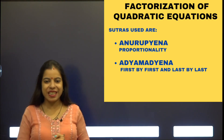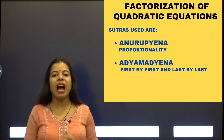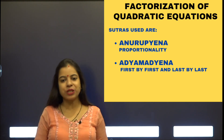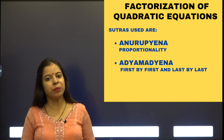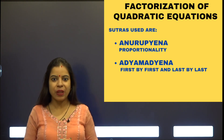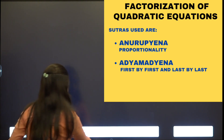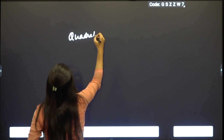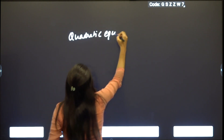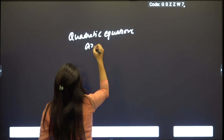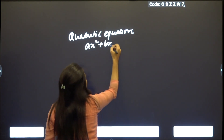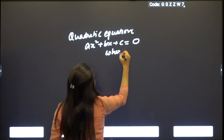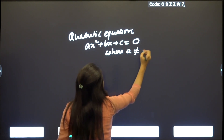Good morning my dear friends. I am Dr. Neha Bhatia and today I am going to discuss how to factorize a quadratic equation with the help of techniques of Vedic mathematics. A quadratic equation is an equation of the form Ax² + Bx + C = 0, where A is nonzero.